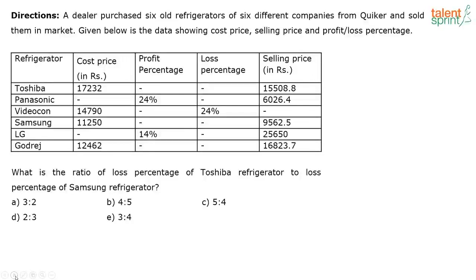Next question: what is the ratio of the loss percentage of Toshiba refrigerator to the loss percentage of Samsung refrigerator? So first, what is the loss percentage of Toshiba? Toshiba was sold for 15,508 and the cost price is 17,232.